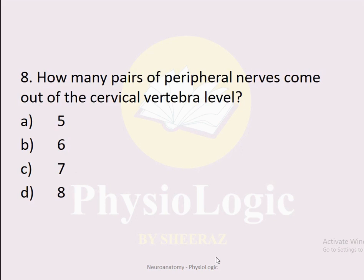There are 31 pairs of peripheral nerves that arise from the spinal cord. Since these are pairs, 31 × 2 = 62 total peripheral nerves. MCQ number eight: How many pairs of peripheral nerves come out of the cervical vertebral level? Option A: 5. Option B: 6. Option C: 7. Option D: 8. The correct option is D: 8.